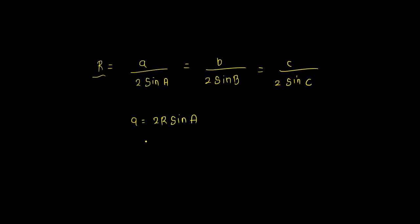So if we differentiate da, then what happens? We get 2R cos A dA. So we can say that da by cos A is equal to 2R dA.